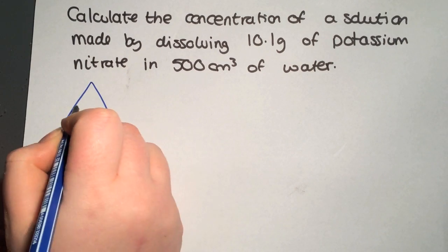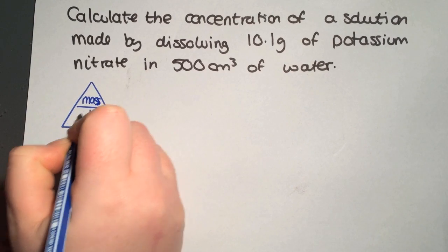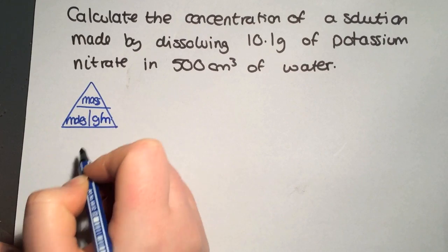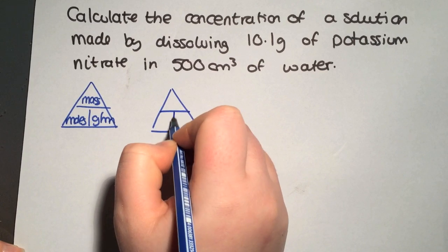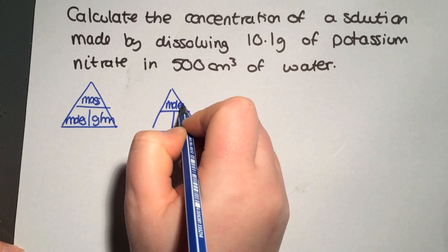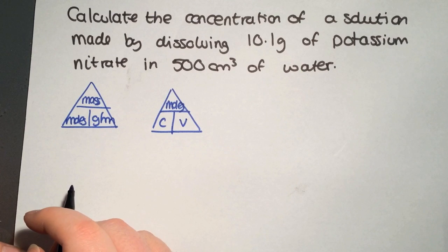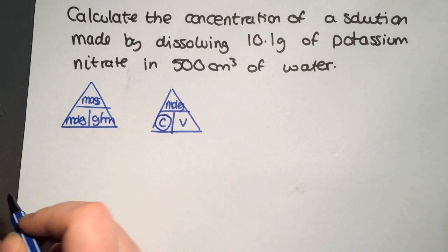First, we're drawing out our mass-moles-gram formula mass triangle, and also our moles-concentration-volume triangle. If you look at the question, you're being asked to calculate the concentration, so you can circle that part.